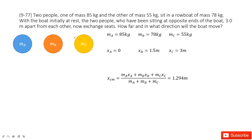We have two people sitting at the ends of a boat. The masses of these two people, ma and mc, are given and their locations are given. The boat's mass and the center of mass of this boat, xb, are also given.